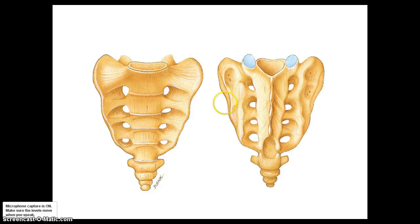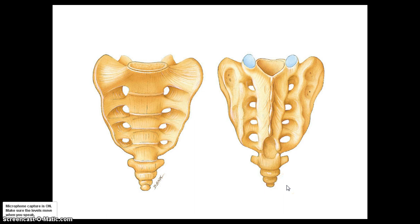Here's a good look at our sacrum and coccyx — these are just modified vertebrae. The sacrum is made of five fused vertebrae and has a hollow tube for the vertebral foramen, plus small holes called foramina that allow nerves to exit down into your legs and lower back. The coccyx, or tailbone, is a little vestigial bone — the remnant of what our tail would be. It's typically made of four fused sections, though some people have three or five. It still serves as an anchor for certain muscles.